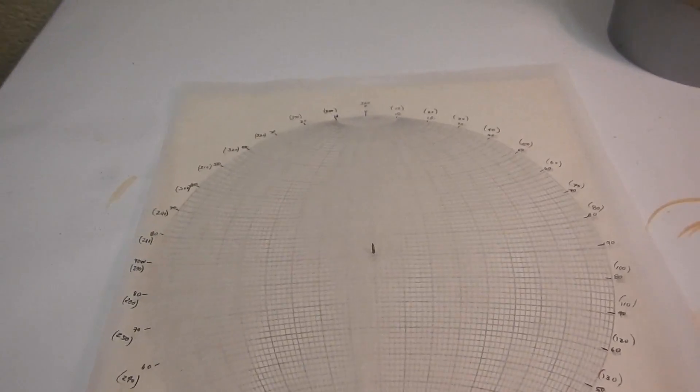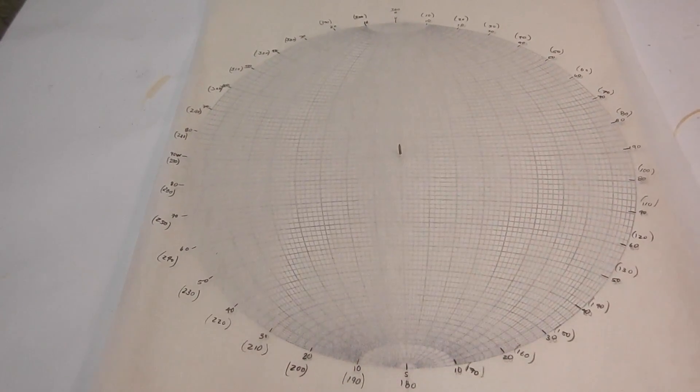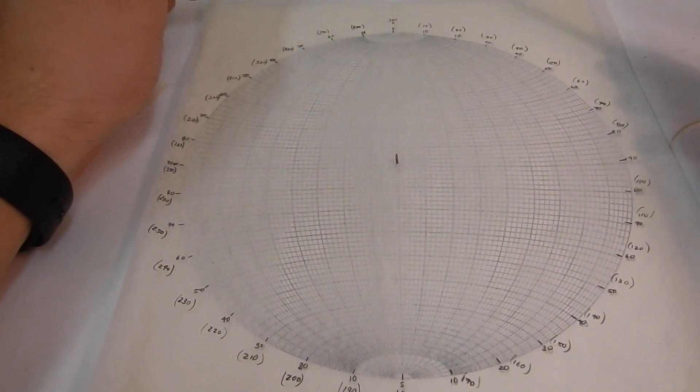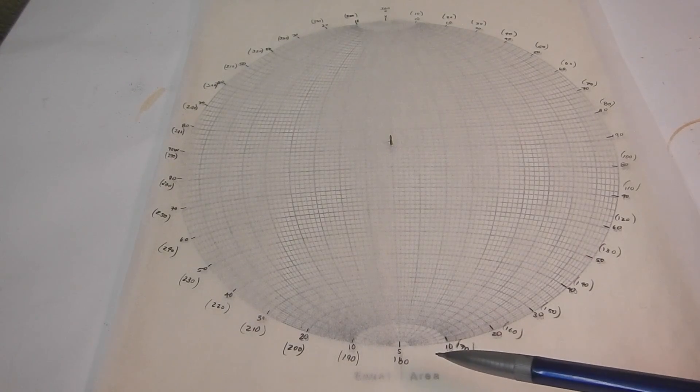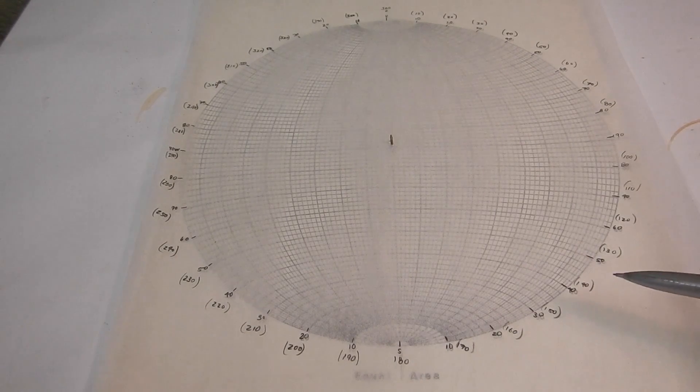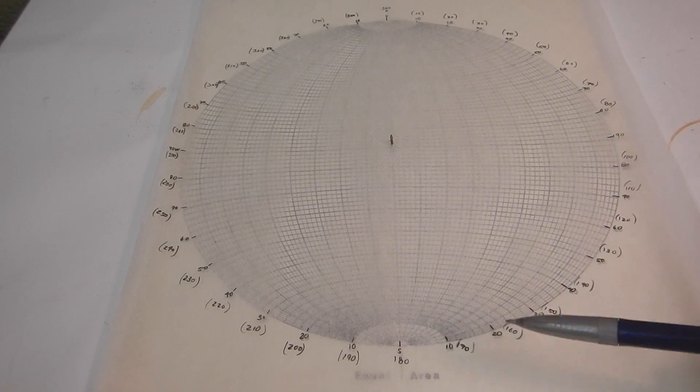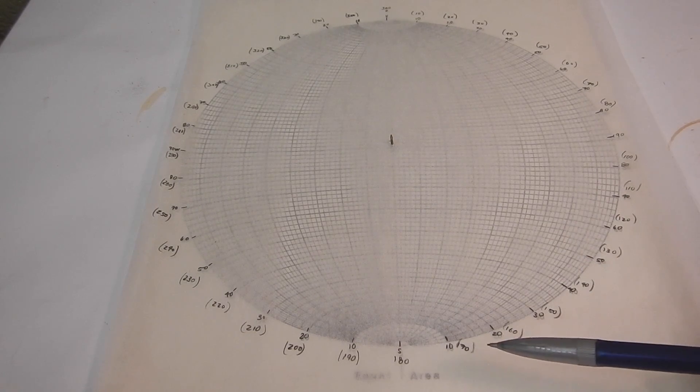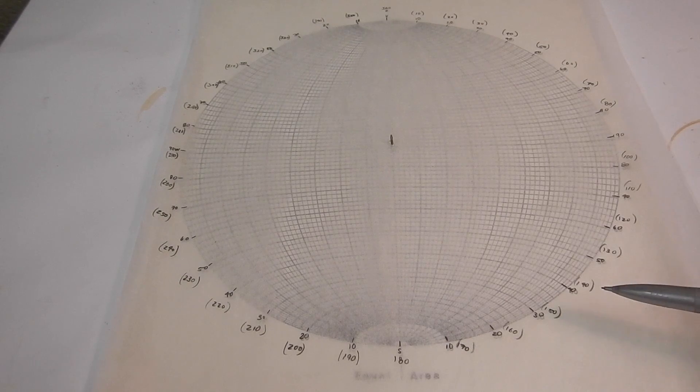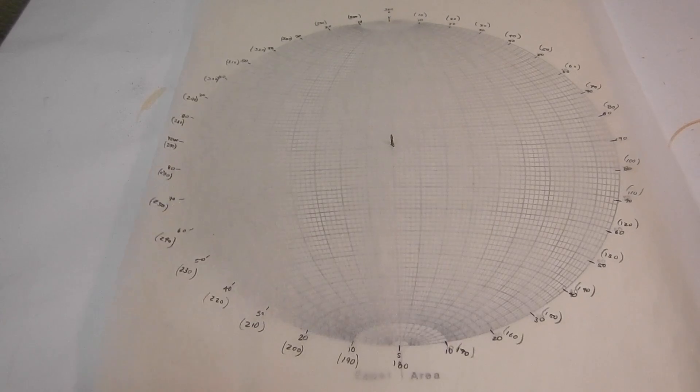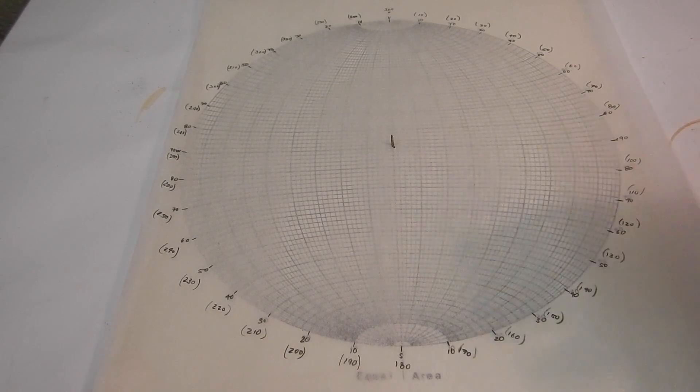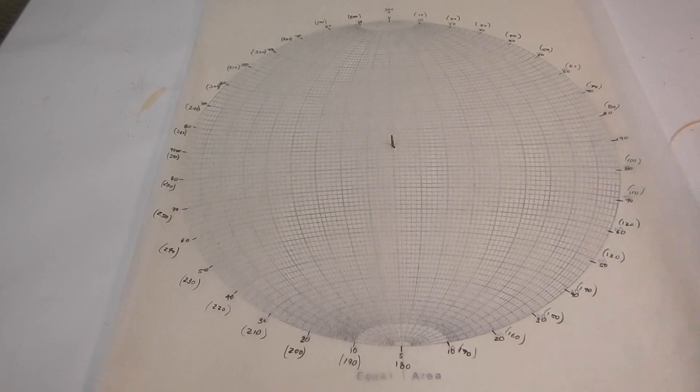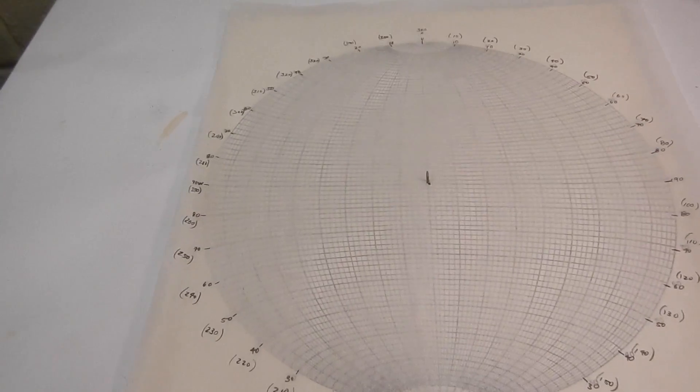After you do that what you'll want to do is then fill out the other degrees so here I've marked, we'll just look down here, here I've marked south 10, 20, 30, 40, 50, 60, 70, 80, 90 but I've also put in parentheses the azimuth so 180, 170, 160, 150, 140, 130, 120 and so on and I did that for every number or I guess every degree in tens on the stereonet.